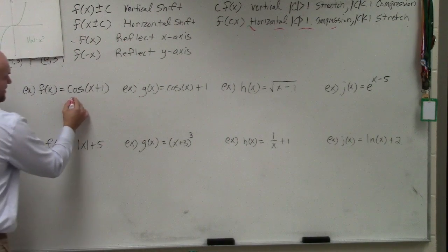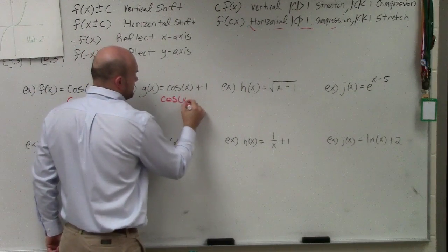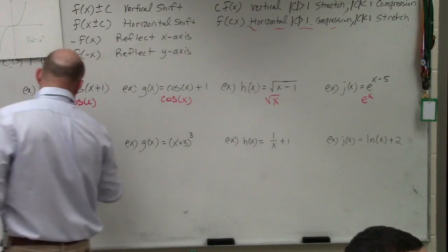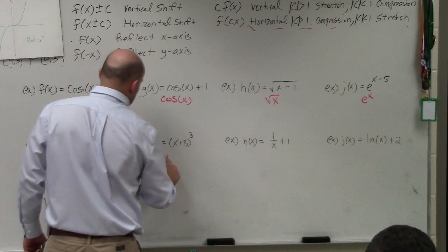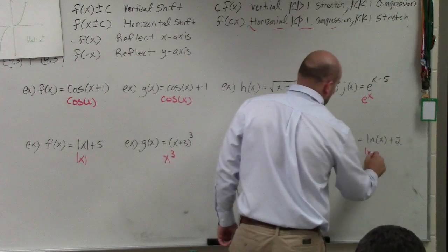So you can see here my function is cosine of x, cosine of x, square root of x, e to the x, absolute value of x, x cubed, 1 over x, and ln of x.